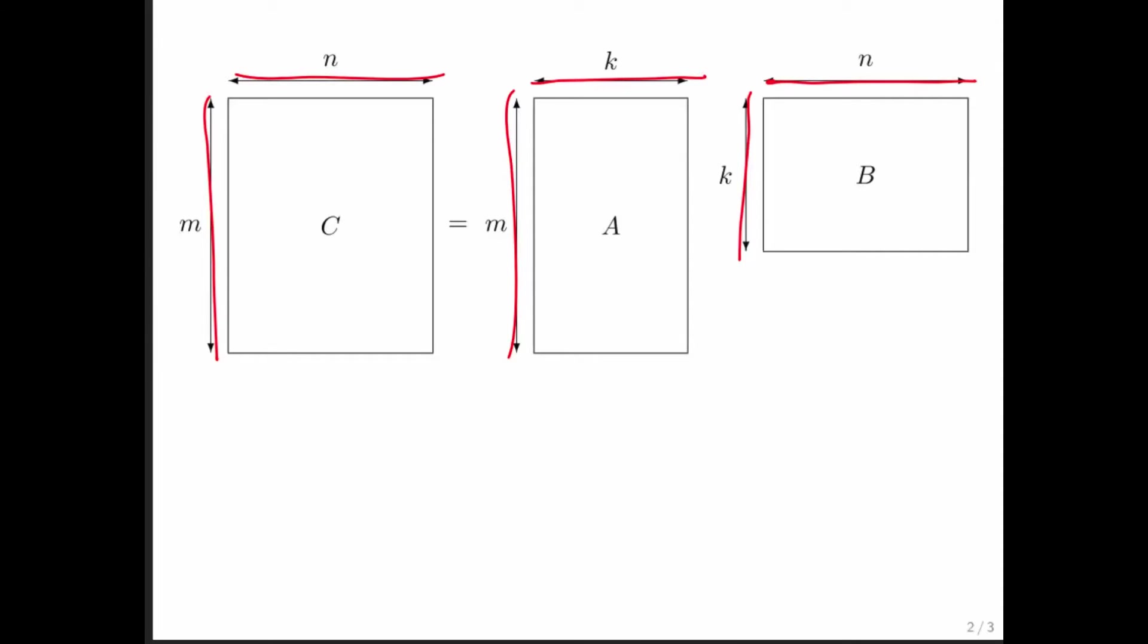First, let's go back to how we came up with how to compute matrix-matrix multiply in the first place. We started by saying, look at a column of C, and that's computed as A times the corresponding column of B. So we do C sub j equals A times B sub j. So we can then ask ourselves the question, what's the cost of computing one column of C?